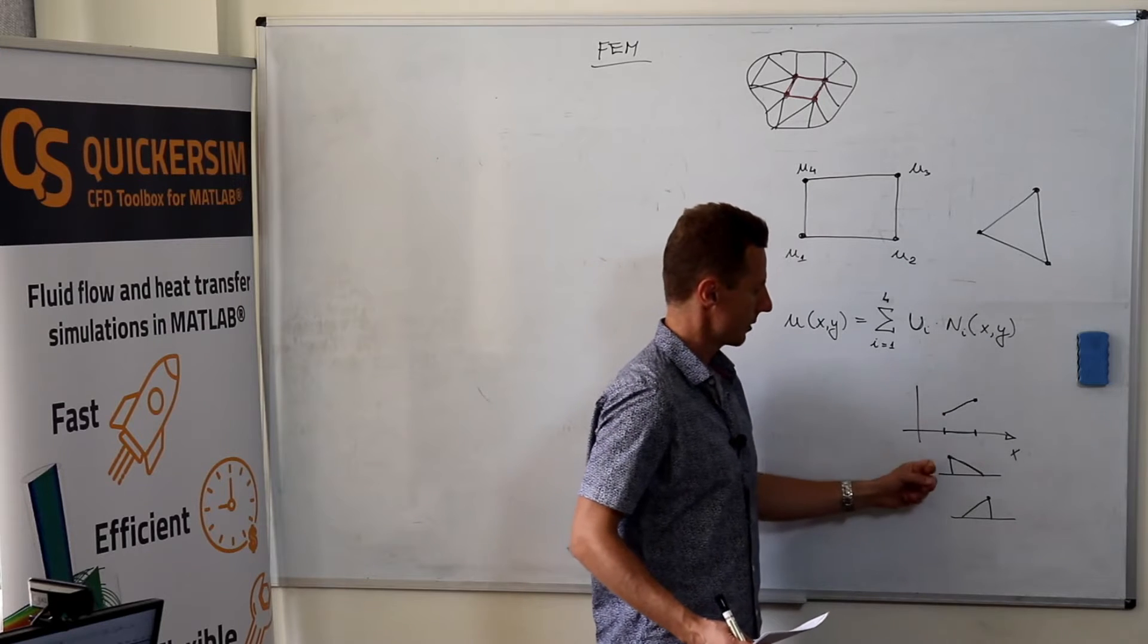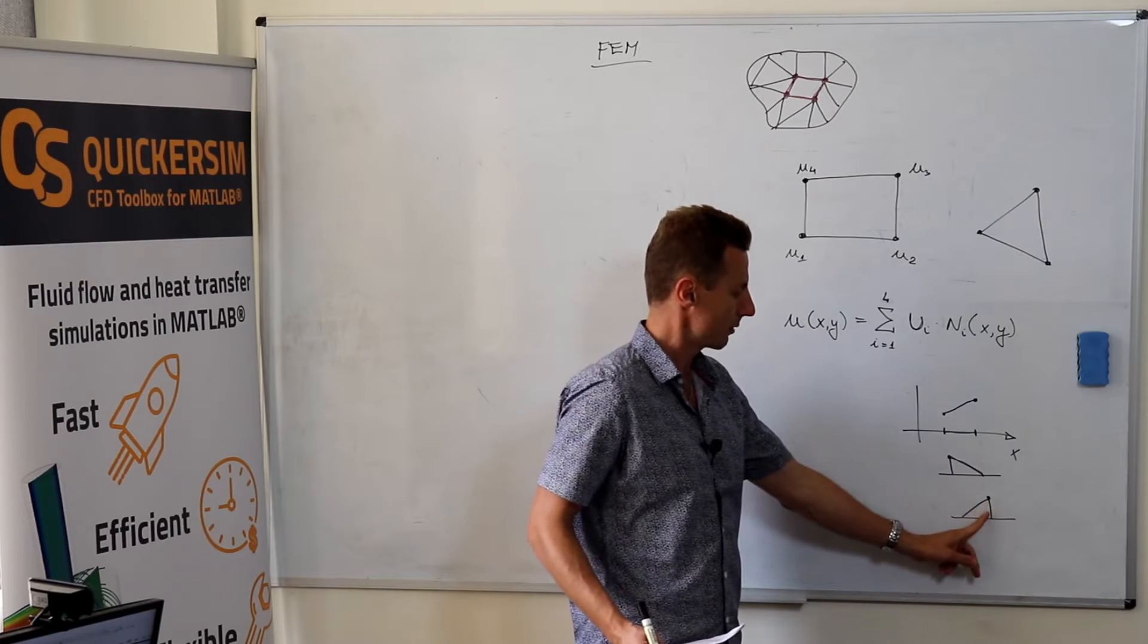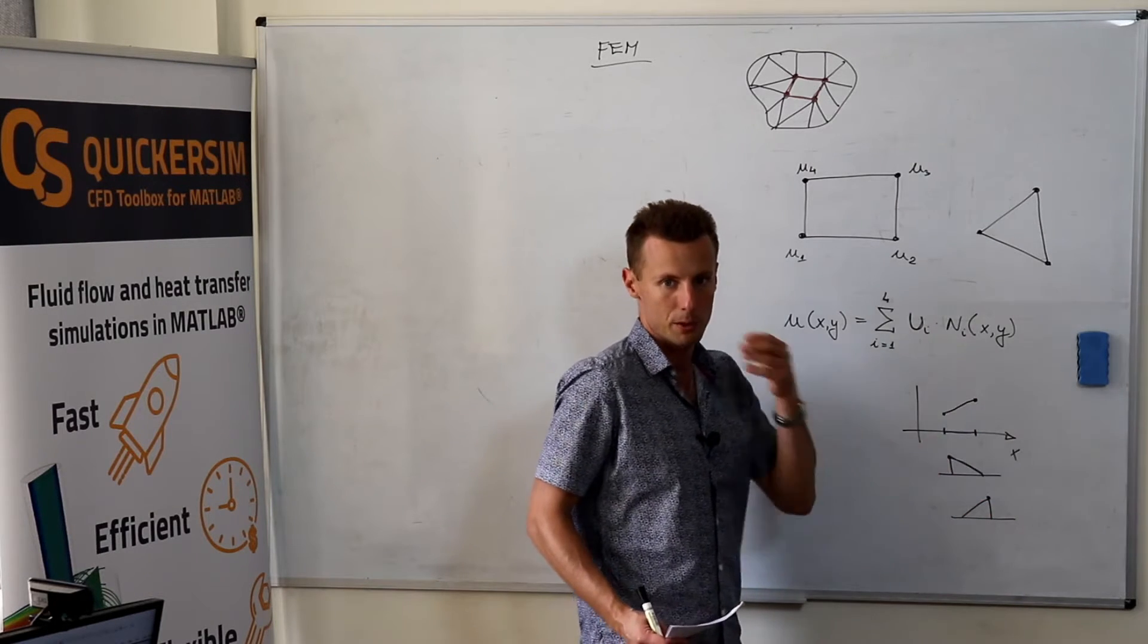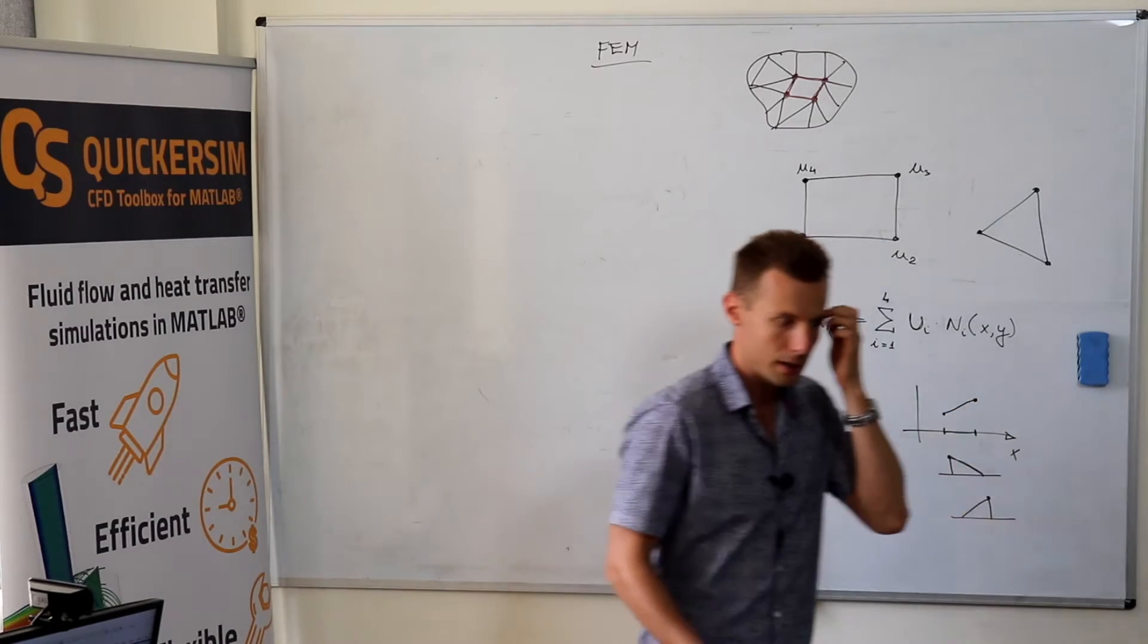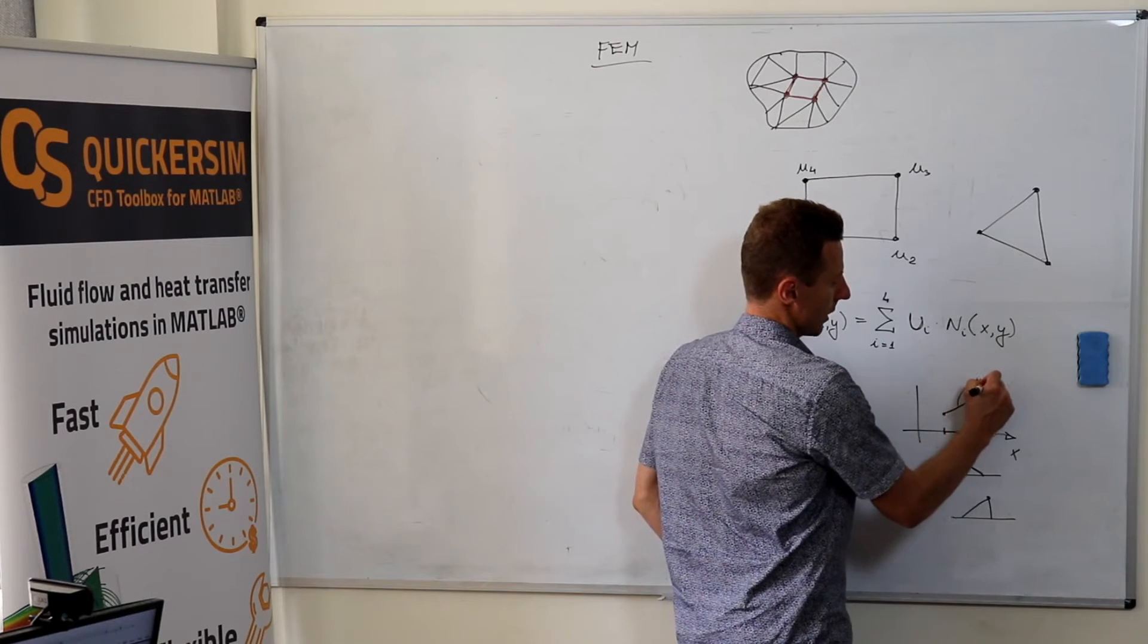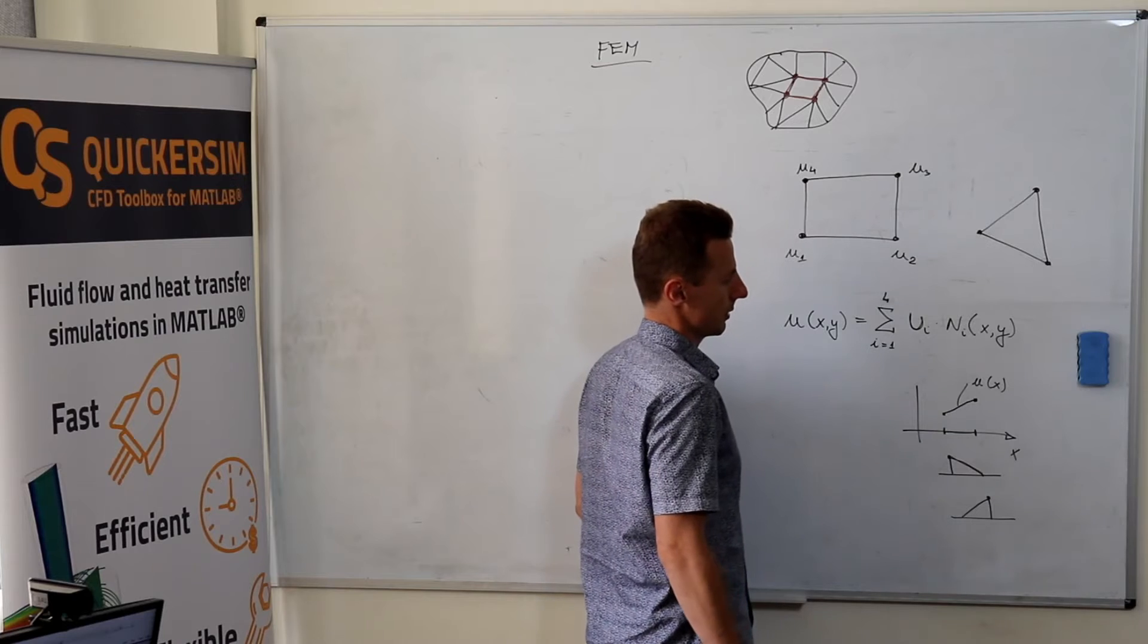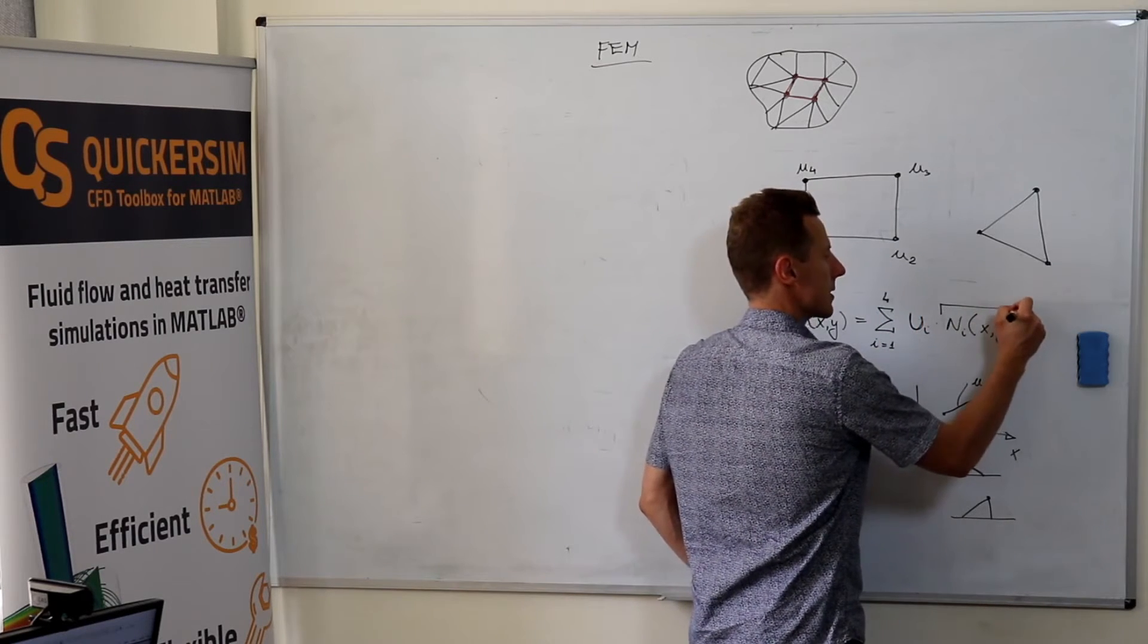Basically, if you take the value at the left node times such a function, plus the value at the other node times this function, what you end up with is the linear interpolation between this value and that value. The nice feature, the nice property, is that we really know the value of u at every location along x. So that's the intuitive idea behind finite elements.